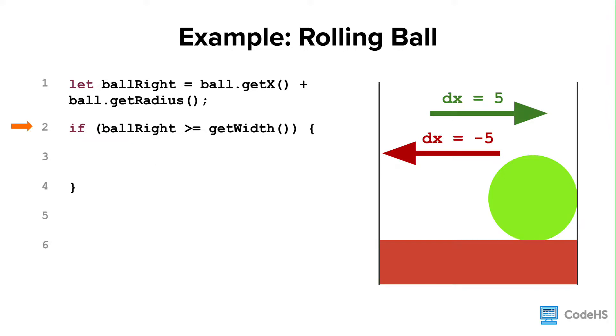This is super easy to implement in our code. If the right side of the ball is greater than or equal to the width of the canvas, then let's reverse dx by writing dx equals negative dx. That means if dx was 5 prior to the collision, it will now equal negative 5. Great! We now have a ball that collides with the right wall.